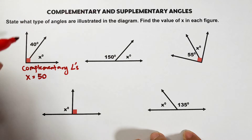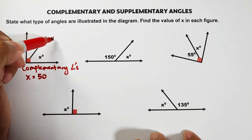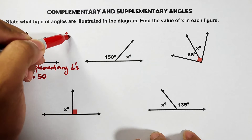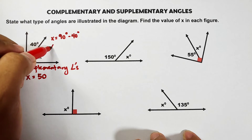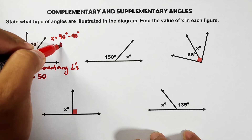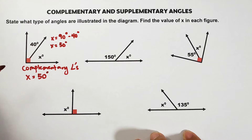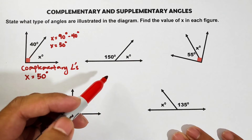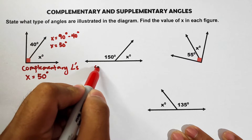To get that, you just do x equals 90 degrees minus 40 degrees, so x is equal to 50 degrees. Now let's move on with item number two. For number two, this one is definitely supplementary angles.